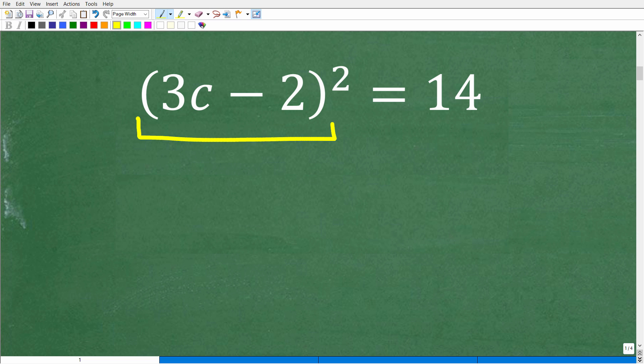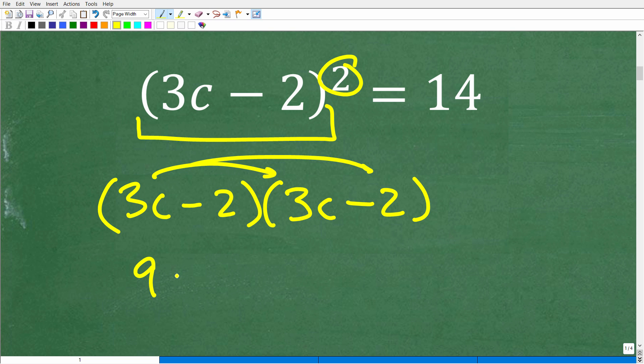What method can we use to solve this equation? Somebody might say, this is 3c minus 2 squared. Maybe we should multiply it by itself. We could do this and use the FOIL method. 3c times 3c is 9c squared, 3c times negative 2 is negative 6c, and we get another negative 6c, and negative 2 times negative 2 is positive 4 equals 14.